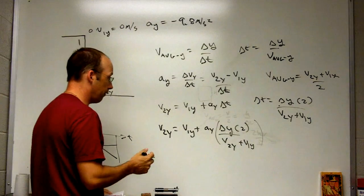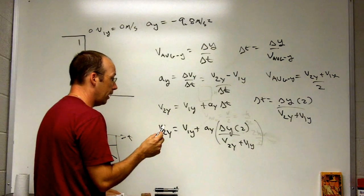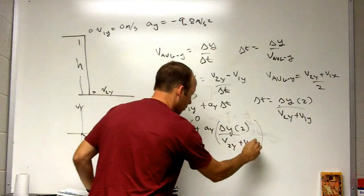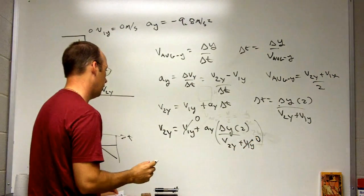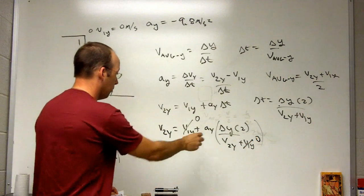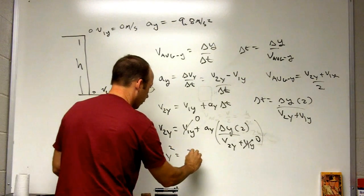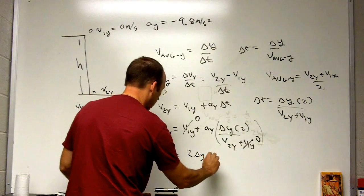I'm going to go ahead and say the initial y velocity is zero. So that means that I can multiply both sides by v2y and I get v2y squared equals 2 delta y ay.